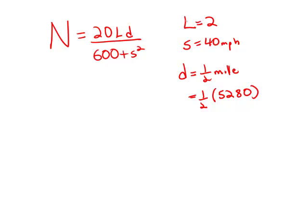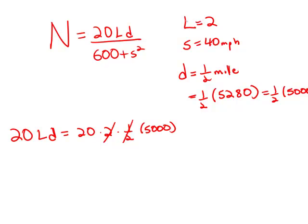It would be a huge mistake to multiply one-half times 5,280. We're going to estimate this as one-half times 5,000. I'm not even going to multiply that because the numerator is 20LD. I'm actually multiplying 20 times L, which is 2, times one-half times 5,000. The 2 and the one-half cancel. So this is 20 times 5,000, which is 100,000 in the numerator.